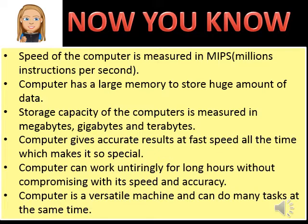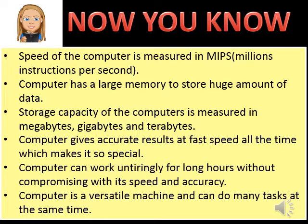Seventh, speed of a computer is measured in MIPS — millions of instructions per second. Eighth, a computer has large memory to store a huge amount of data. Ninth, storage capacity is measured in megabytes, gigabytes, and terabytes. Tenth, a computer gives accurate results at fast speed all the time. Eleventh, a computer can work untiringly for long hours without compromising speed and accuracy. Twelfth, a computer is a versatile machine and can do many tasks at the same time.